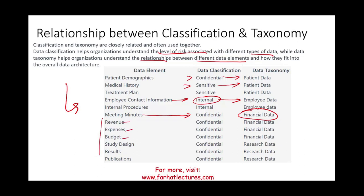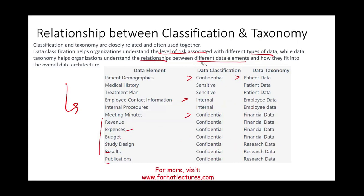Revenues, expenses, budget, study design, results, and publications can also be classified as sensitive or confidential, depending on what the organization decides. Different companies will have different classifications, categories, hierarchies, and data elements. All you need to know is what data classification and data taxonomy mean — whether you are studying for the CPA, CISA, CMA exam, accounting information system, or the certified internal auditor exam. Study hard, good luck, invest in yourself and your career, and stay safe.